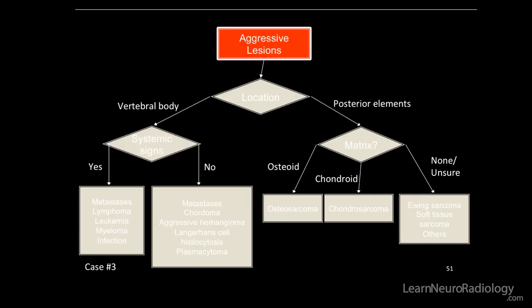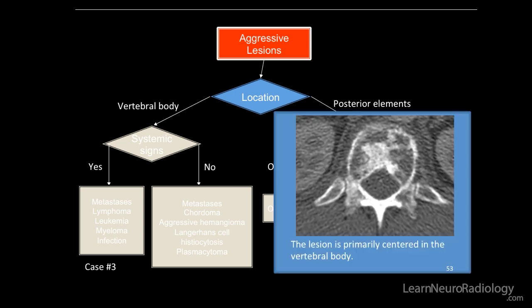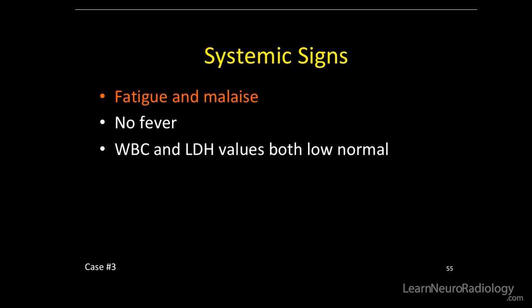So we're going to use our aggressive lesion algorithm. Location: vertebral body and posterior elements, primarily centered in the vertebral body. Any systemic signs? The patient did report fatigue and malaise, no fever, and the white blood cell and LDH values were both low normal.